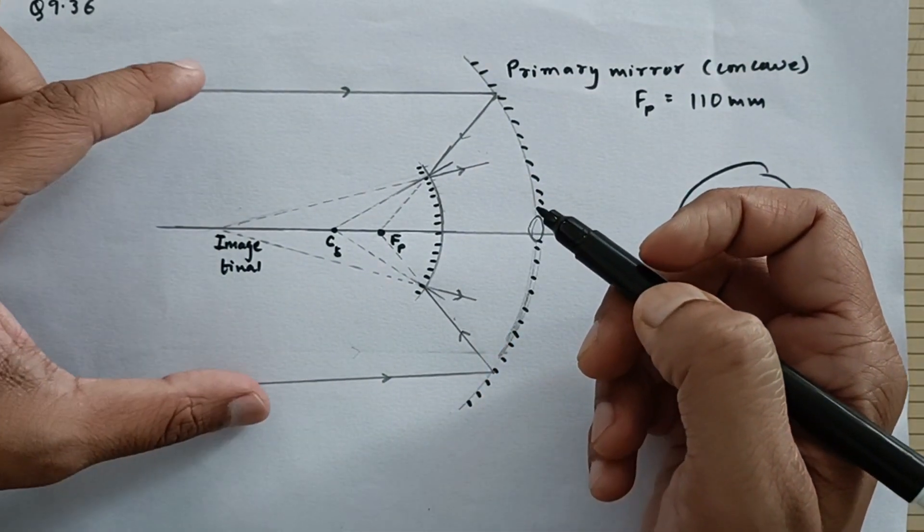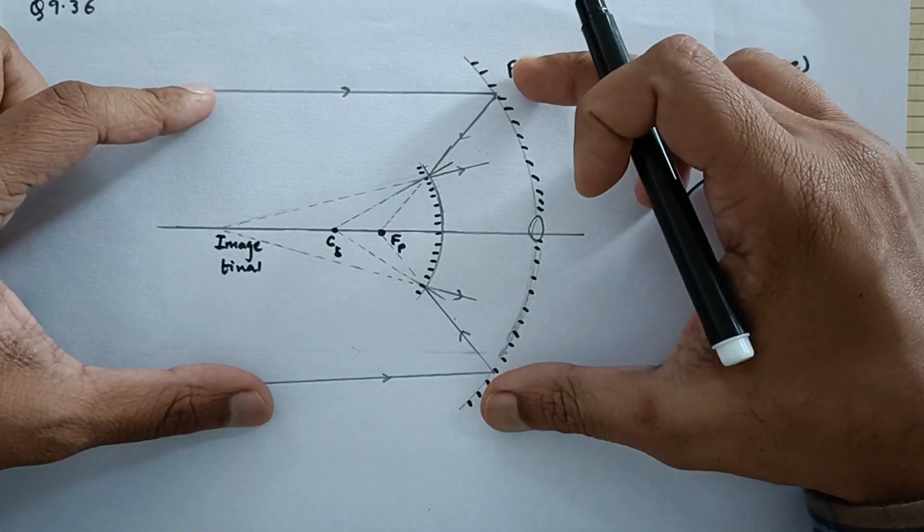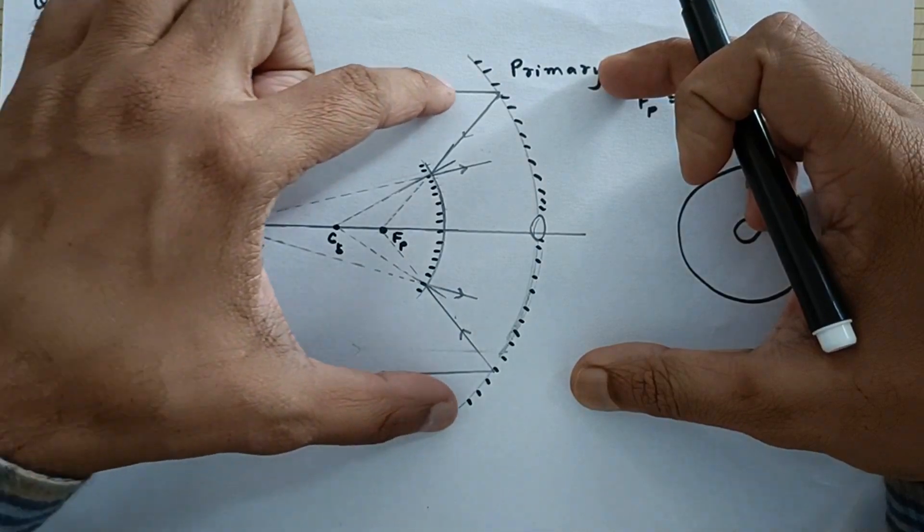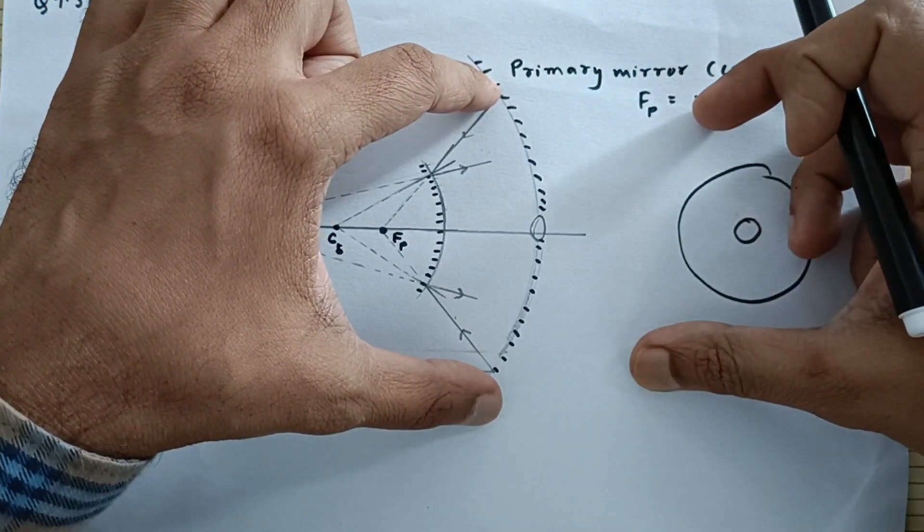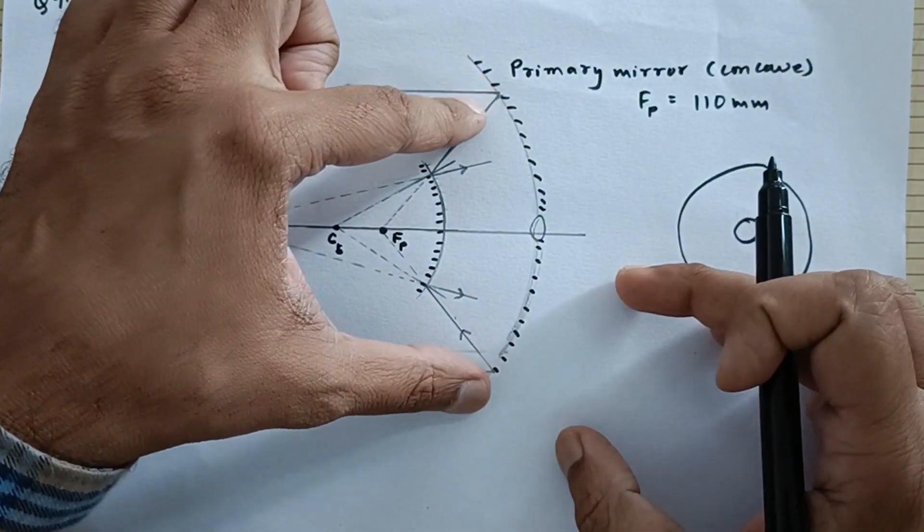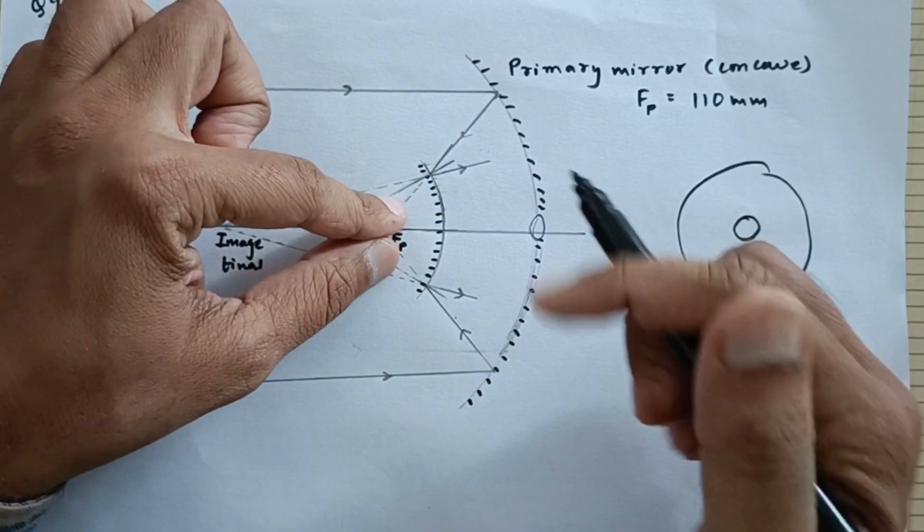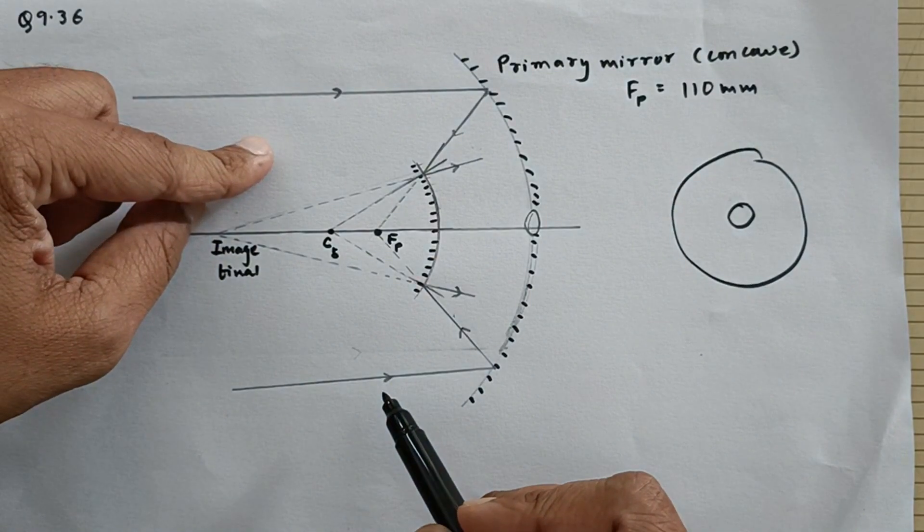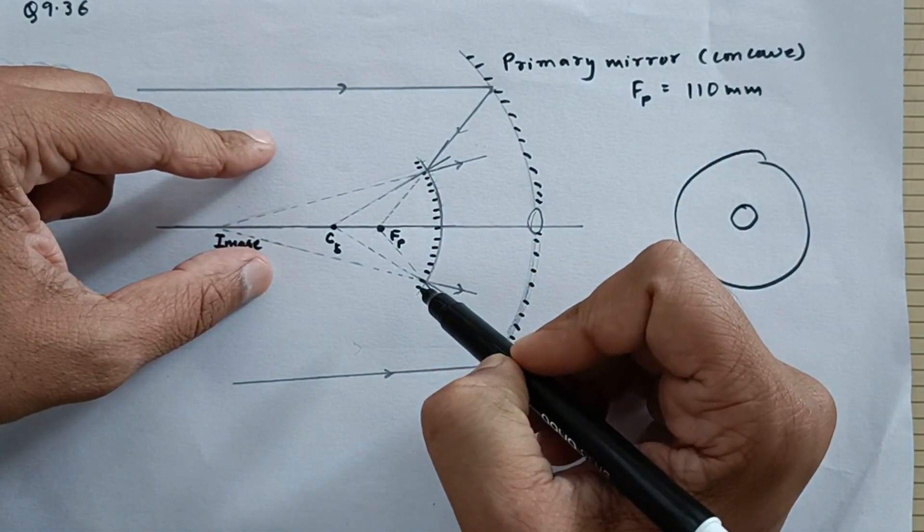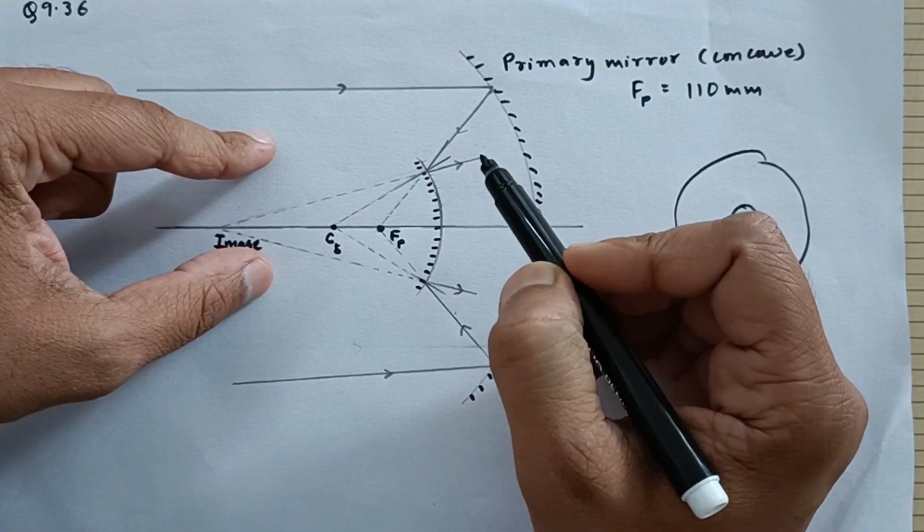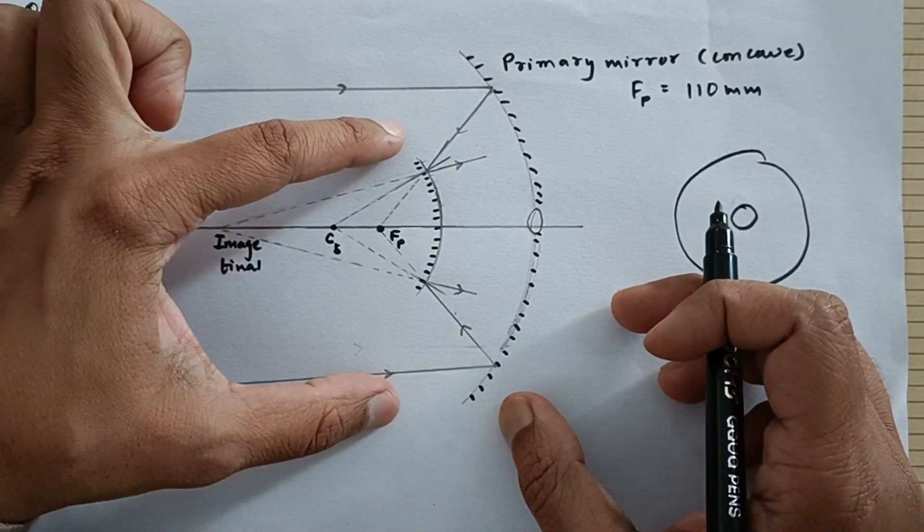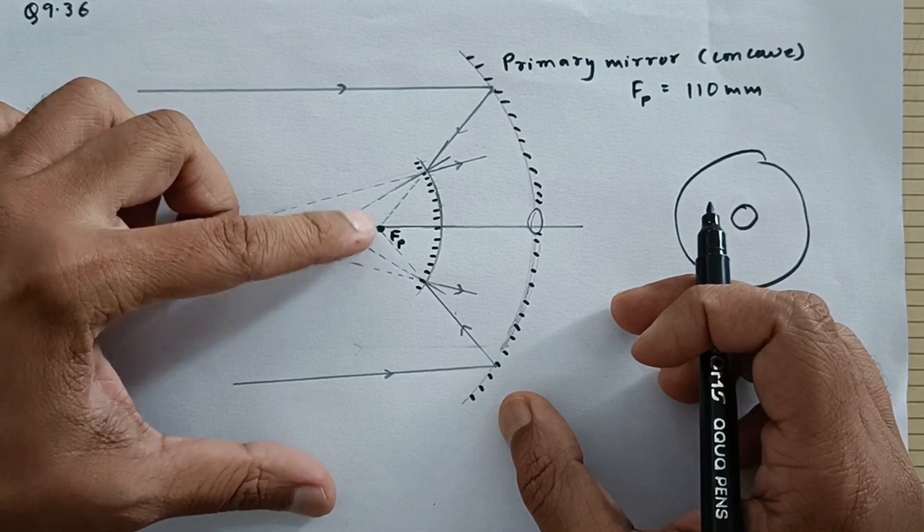Now this is the secondary mirror which is a convex mirror. Now you have to understand this very carefully that you are looking at an object at infinity. So the rays are going to come parallel, they are going to hit the primary mirror. Now since this is a concave mirror, the rays are going to converge, and in absence of this they would converge at the focus of the primary mirror.